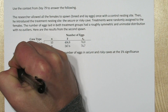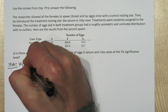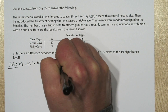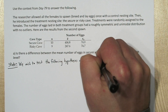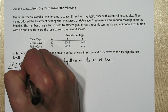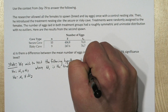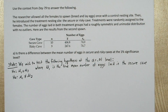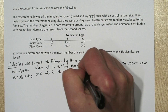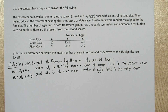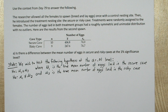Let's use the four-step solving process. For our state step, we wish to test the following hypotheses at the alpha equals .01 level. Our null hypothesis is mu sub 1 equals mu sub 2, and since we're looking for any difference, our alternative hypothesis is mu sub 1 is not equal to mu sub 2, where mu sub 1 is the true mean number of eggs laid in the secure caves, and mu sub 2 is the true mean number of eggs laid in the risky cave.